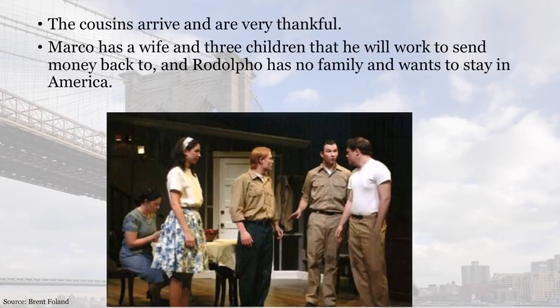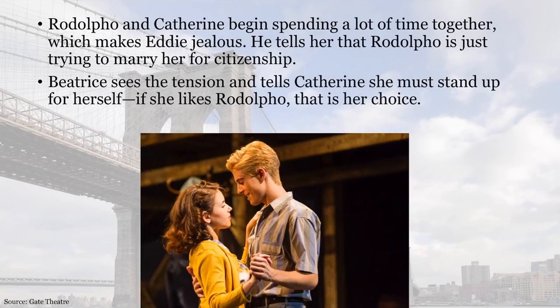Rodolfo, Beatrice's other cousin, doesn't have any family and he wants to stay in America and eventually gain citizenship. Rodolfo and Catherine begin spending quite a lot of time together, which makes Eddie — her uncle — jealous. He tells her that Rodolfo is just trying to marry her for citizenship. Beatrice sees the tension and tells Catherine that she must stand up for herself: if she likes Rodolfo, then that's her choice.